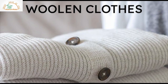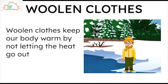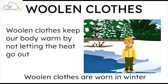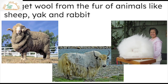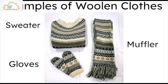Woollen clothes: woolen clothes keep our body warm by not letting heat escape. So these clothes are worn in winter. We get wool from the fur of animals like sheep, yak and rabbit. Examples include sweaters, mufflers and gloves.